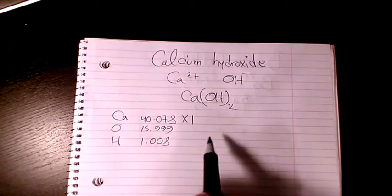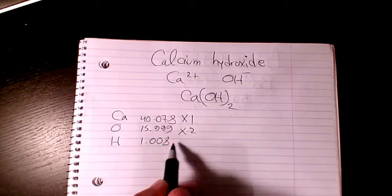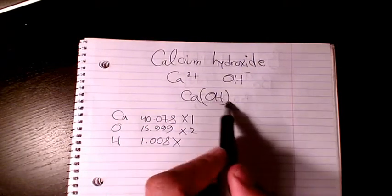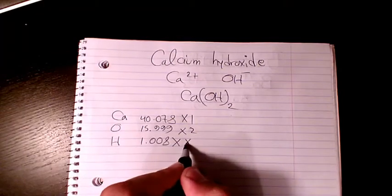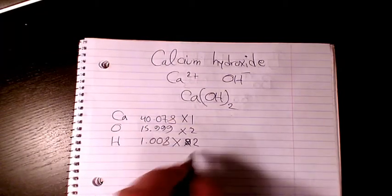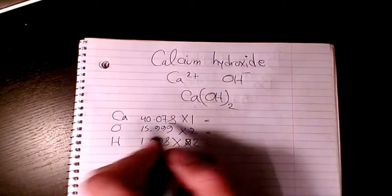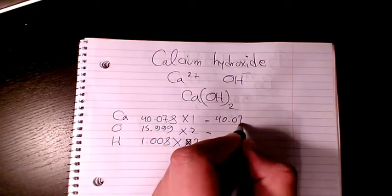How many atoms of oxygen do we have? One times two, you have two of them. And what about hydrogen? We have one times two. So when you calculate, calcium is 40.078, it's going to be the same thing.